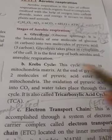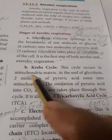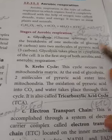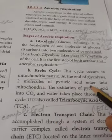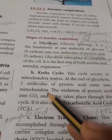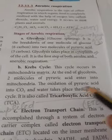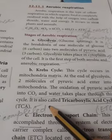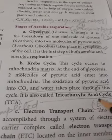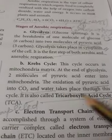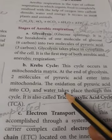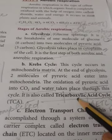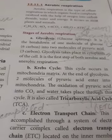Number two: the Krebs cycle. This cycle occurs in the mitochondrial matrix. At the end of glycolysis, two molecules of pyruvic acid enter the mitochondrial matrix. The oxidation of pyruvic acid takes place and produces CO2 and water through this cycle. This cycle is also called the TCA cycle — TCA stands for Tricarboxylic Acid cycle.